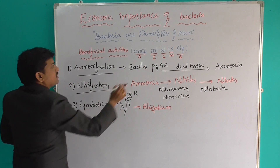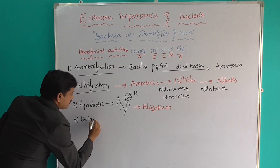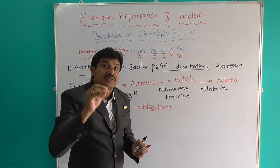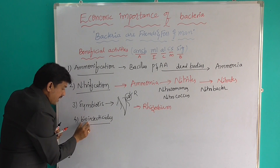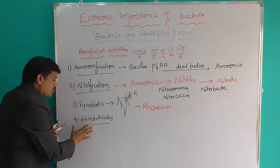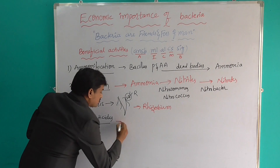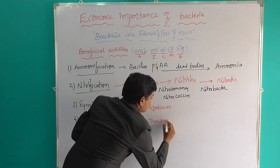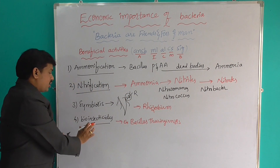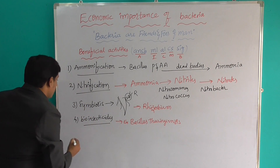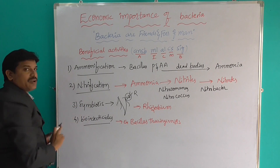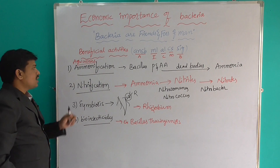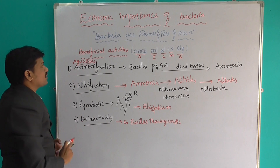The fourth beneficial activity is bio-insecticides. Some bacteria kill certain insects, so they are called bio-insecticides. The best example is Bacillus thuringiensis. So in agriculture, ammonification, nitrification, symbiosis, and bio-insecticides — these four activities — are very very useful in the agricultural field.